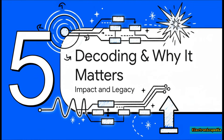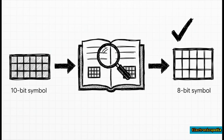We've seen the how — let's zoom back out and talk about the so what. The really beautiful part of this whole system is that going backwards, the decoding is super simple. The receiver just gets a 10-bit symbol, does a quick lookup in a table, and it has the original 8-bit byte back. Because the code was designed so carefully, there's no confusion — each valid 10-bit symbol can only map back to one possible 8-bit value.